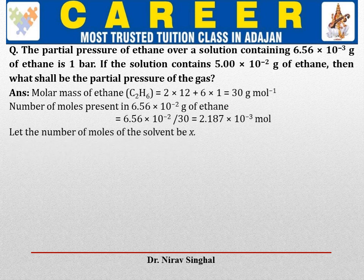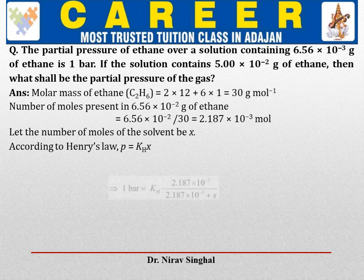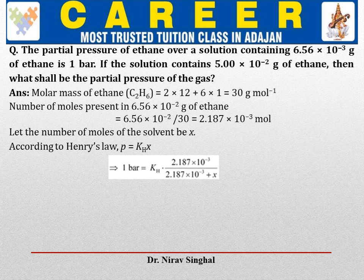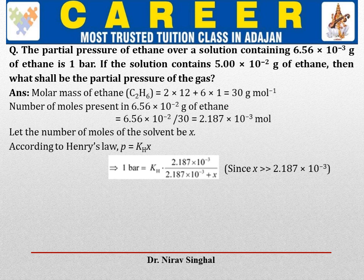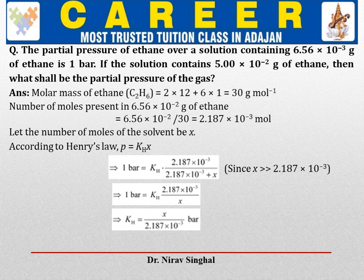Let the number of moles of solvent be X. According to Henry's law, P = KH × X_mole_fraction. Pressure is 1 bar. KH is unknown. Mole fraction of ethane = 2.187 × 10⁻³ / (2.187 × 10⁻³ + X). Since X (moles of solvent) is very much greater than moles of ethane, we approximate: 1 = KH × (2.187 × 10⁻³ / X). Hence KH = X / (2.187 × 10⁻³) bar.